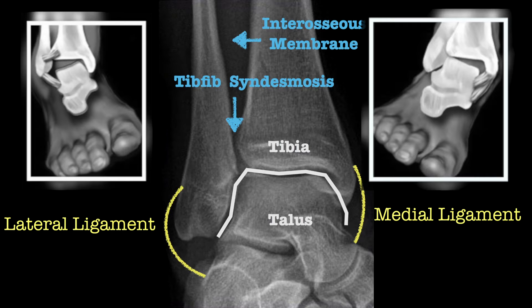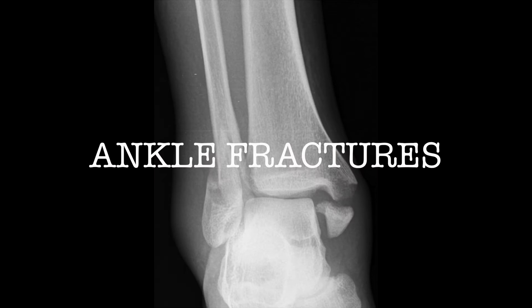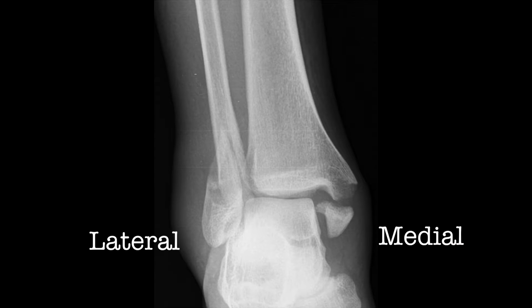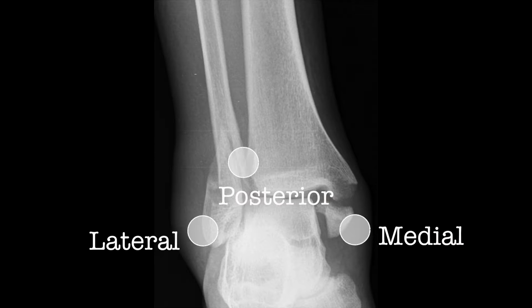Now that we've covered the basics, let's look at some ankle fractures. Ankle fractures are fractures that involve the lateral, medial, and posterior malleoli. They can happen in isolation or can be associated with ligamentous or syndesmotic injury. They are classified according to the Dennis-Weber and Lauge-Hansen classifications, the simplest of which is the Weber classification.